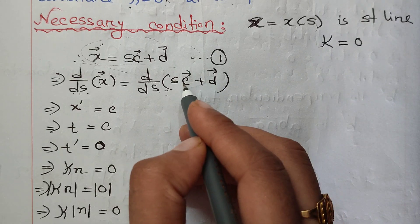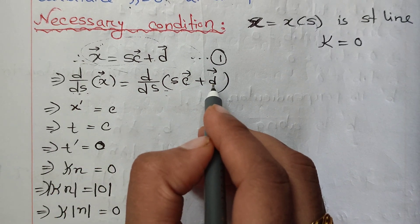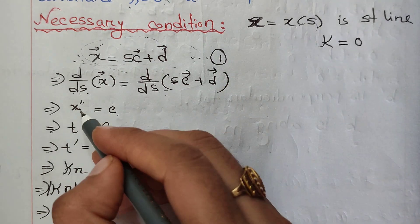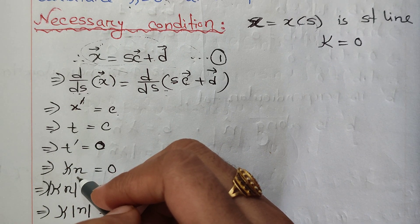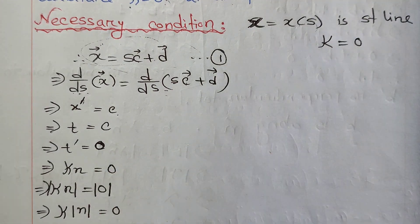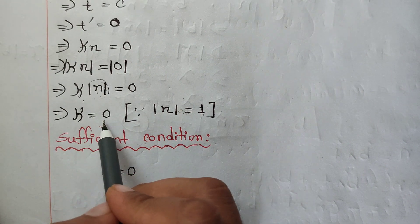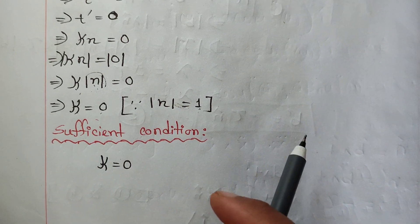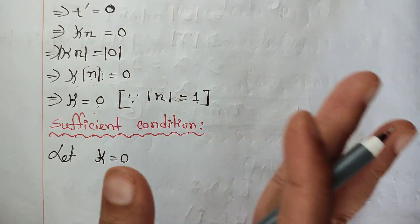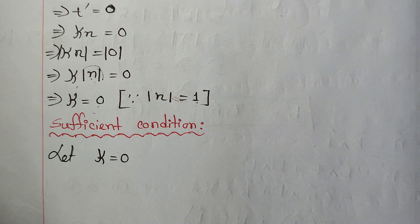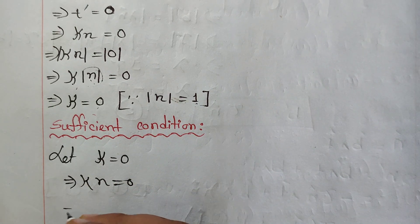We have to show that k is equal to 0, and that the straight line is equal to 0. Here x equals c, t equals t. We have to show that the curve is a straight line, so we show that the curve equals 0.